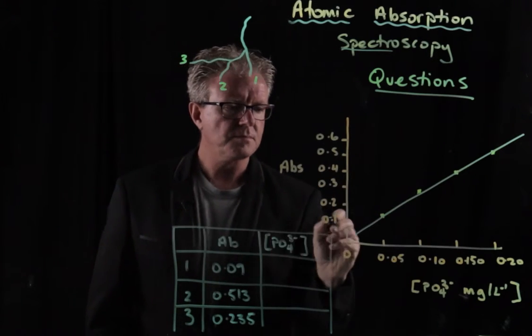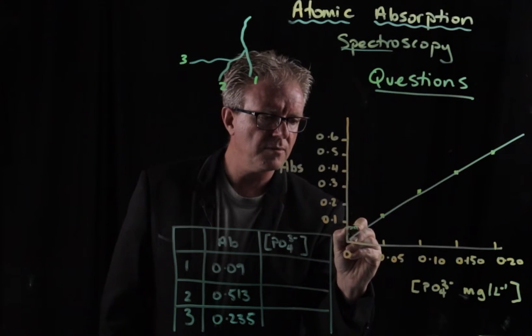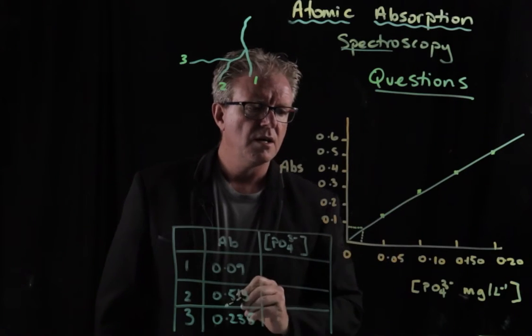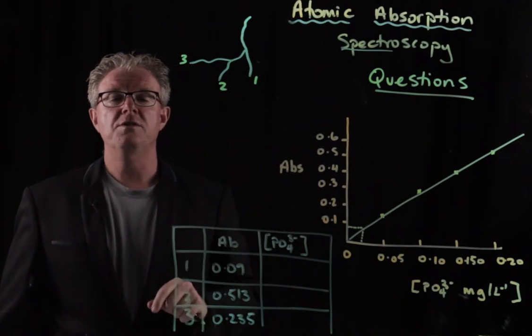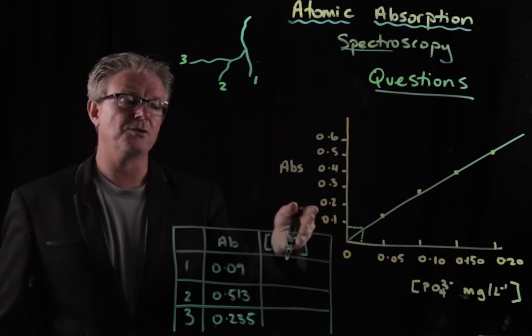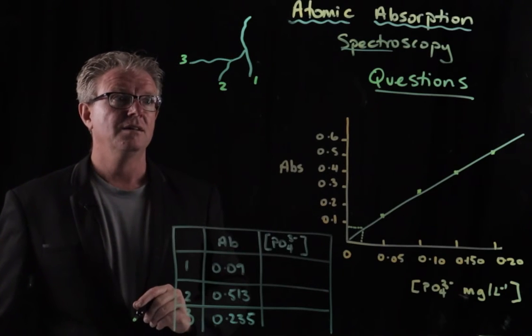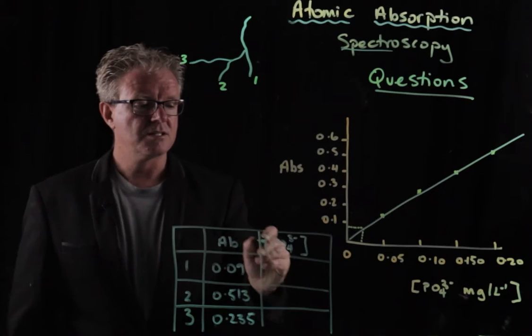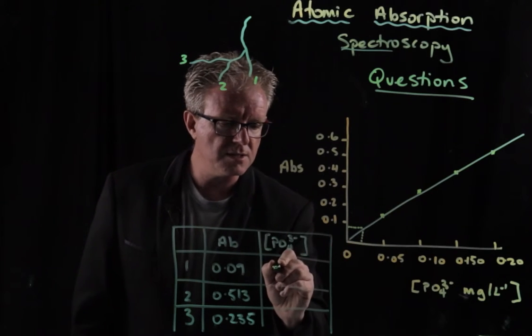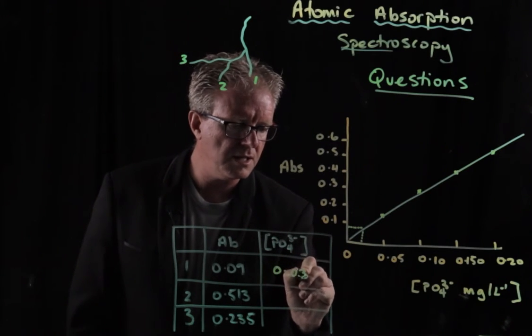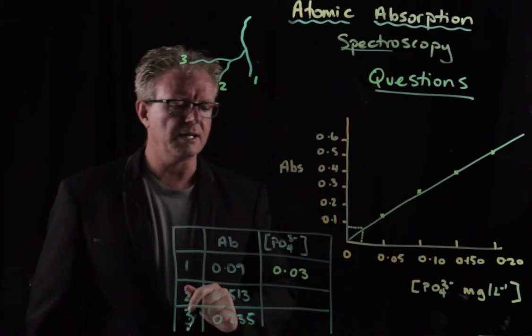0.09, right down here. Of course, with the graph that you have in the paper, it'll be a lot more accurate than what I've just scribbled on the, scribbled just here. And so that turns out to be around about 0.03 milligrams per litre.